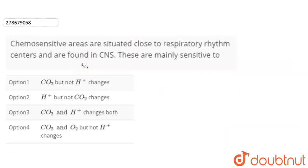So the question here is: Chemosensitive areas are situated close to respiratory rhythm centers and are found in CNS. These are mainly sensitive to - Option 1: CO2 but not hydrogen ion changes. Option 2 is hydrogen ions but not CO2 changes. Option 3 is CO2 and hydrogen ion changes both. And option 4 says CO2 and O2 but not hydrogen plus ions changes.